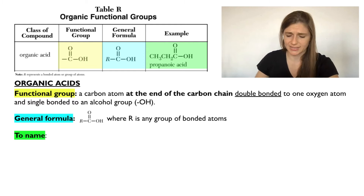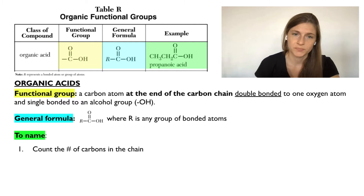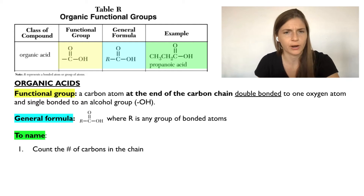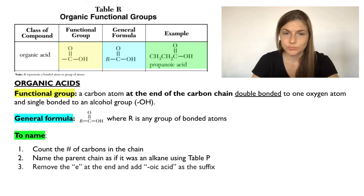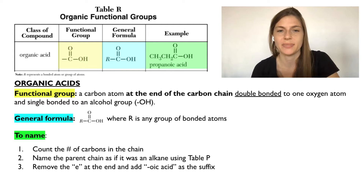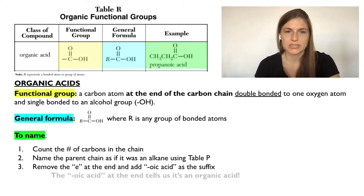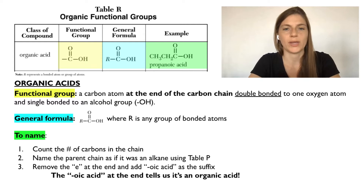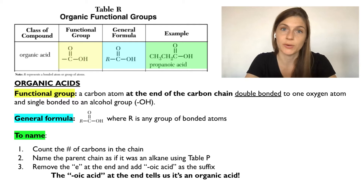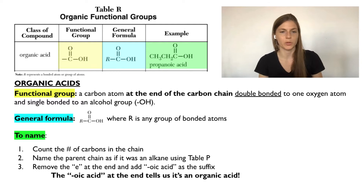To name organic acids, you first count the number of carbons in the chain. Don't worry about which way you're numbering — it does not matter for organic acids. Then you name the parent chain as if it was an alkane using Table P. You remove the E at the end of the alkane's name and add "oic acid" instead as the suffix. You will always know that you have an organic acid if the ending is "oic acid."